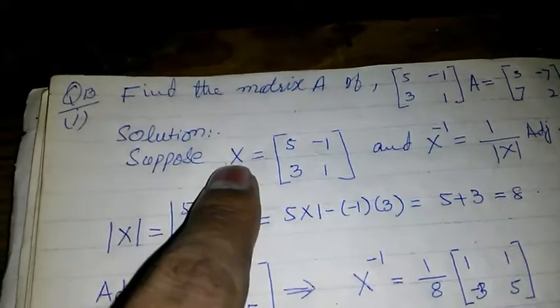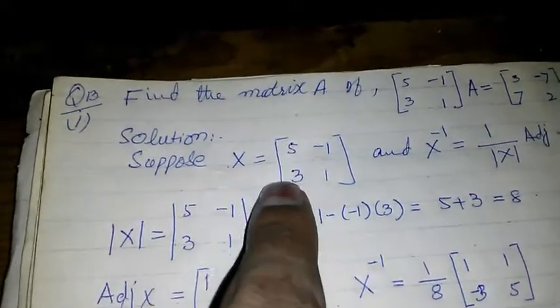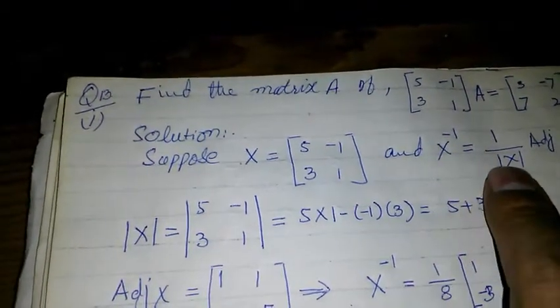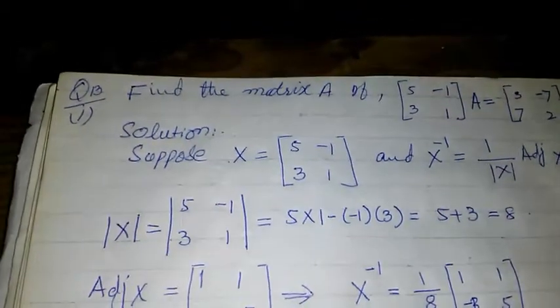Solution: Suppose X equals the matrix [5, 3; -1, 1] and X inverse equals 1 over the determinant of X times the adjoint of X.